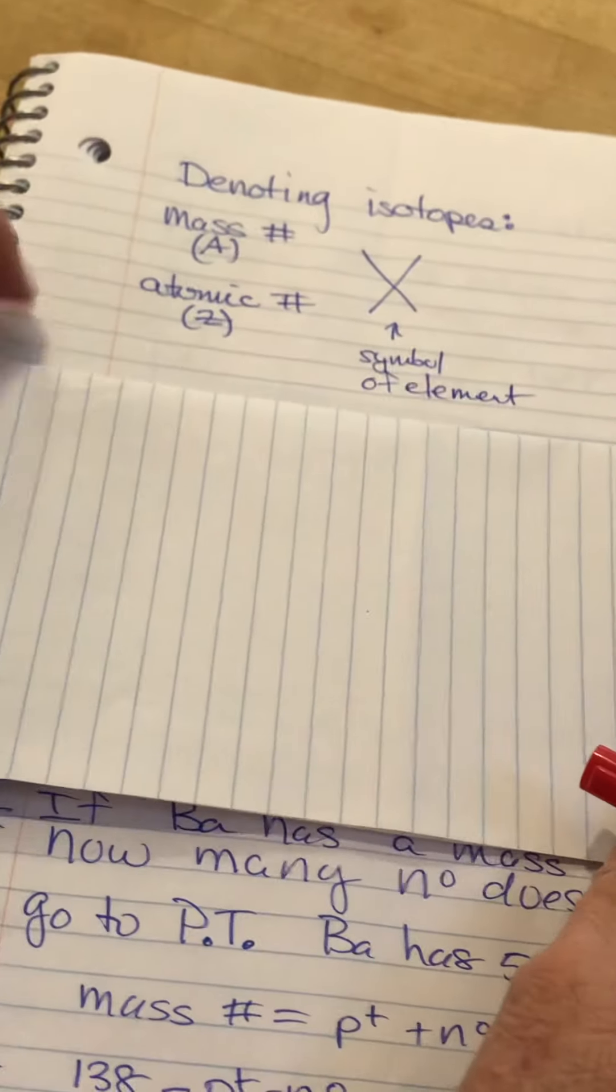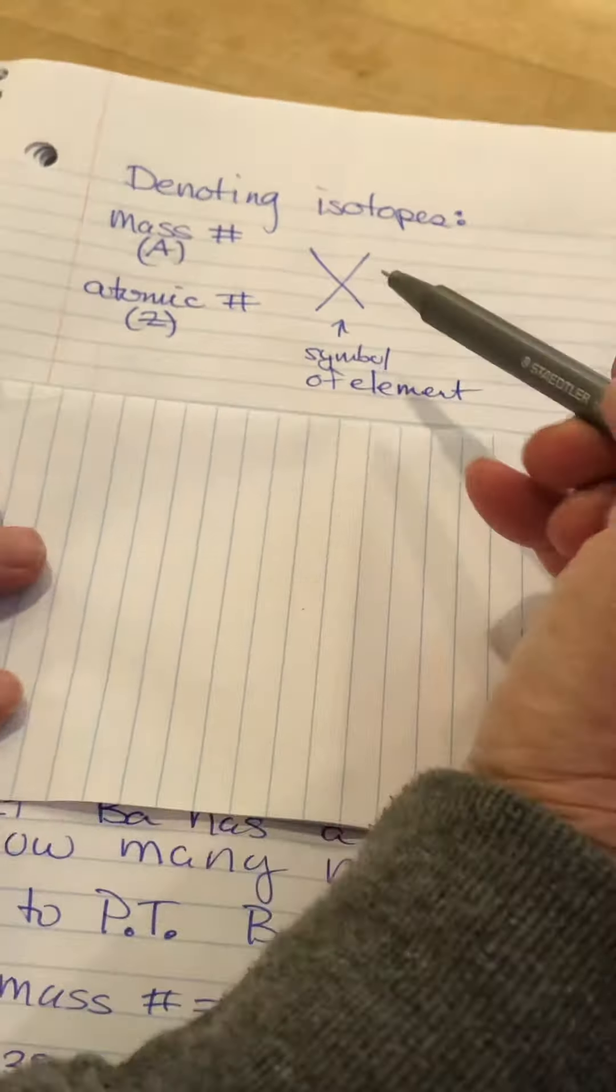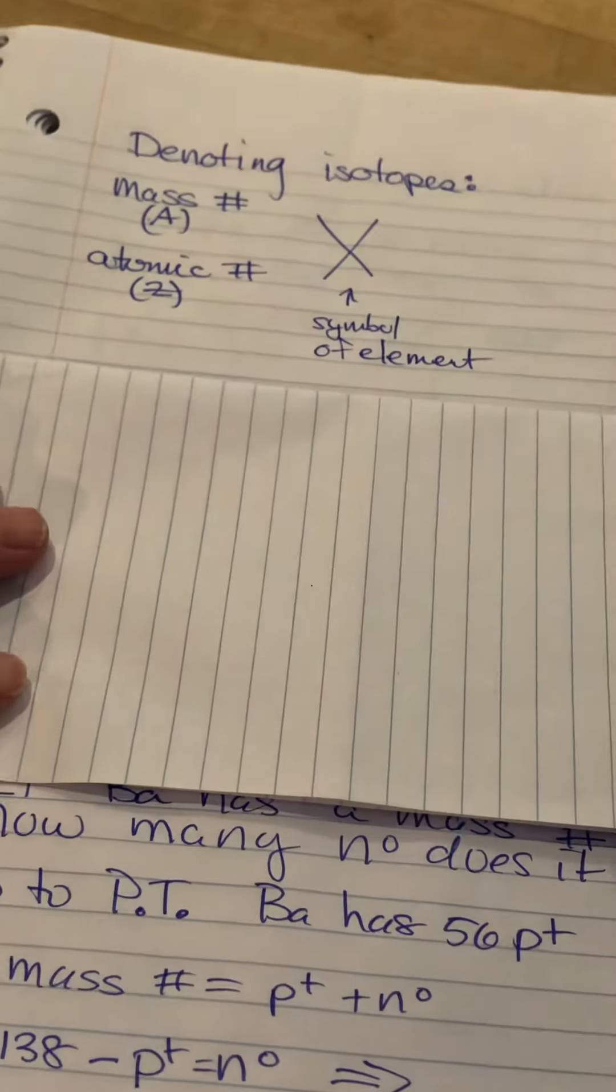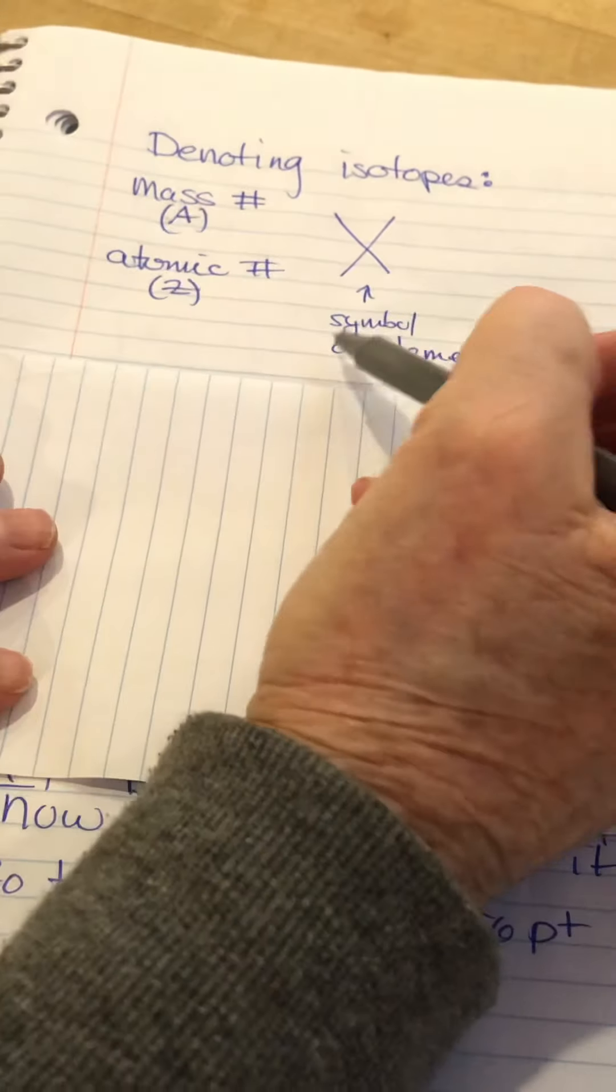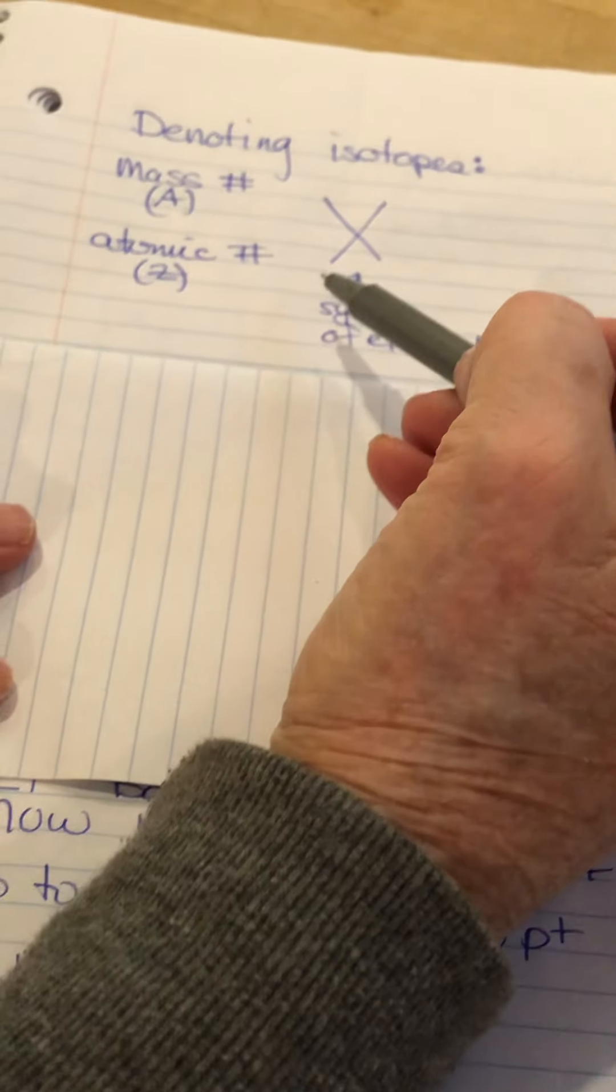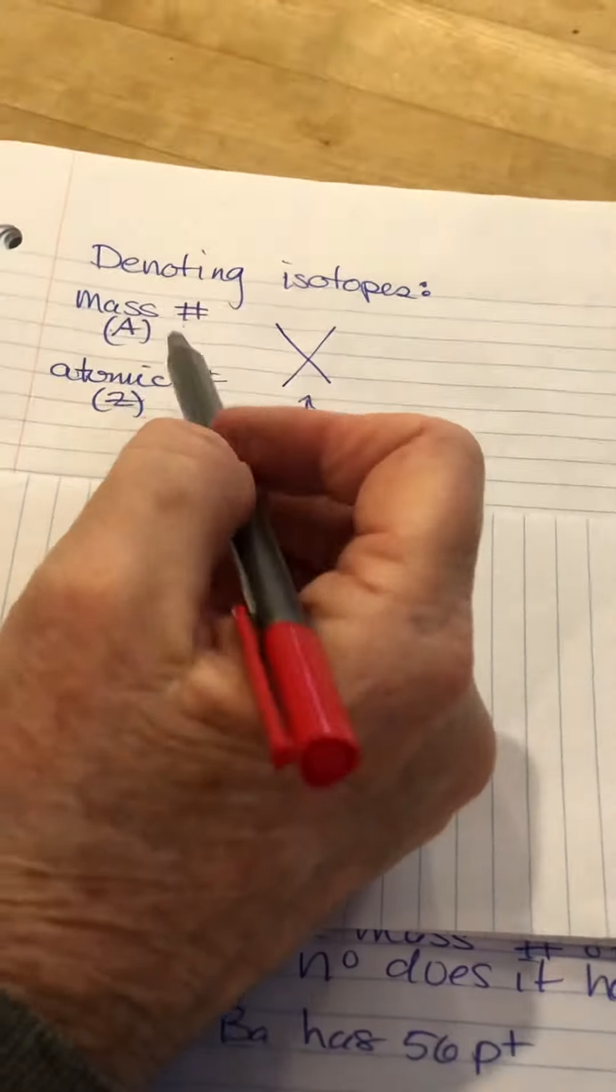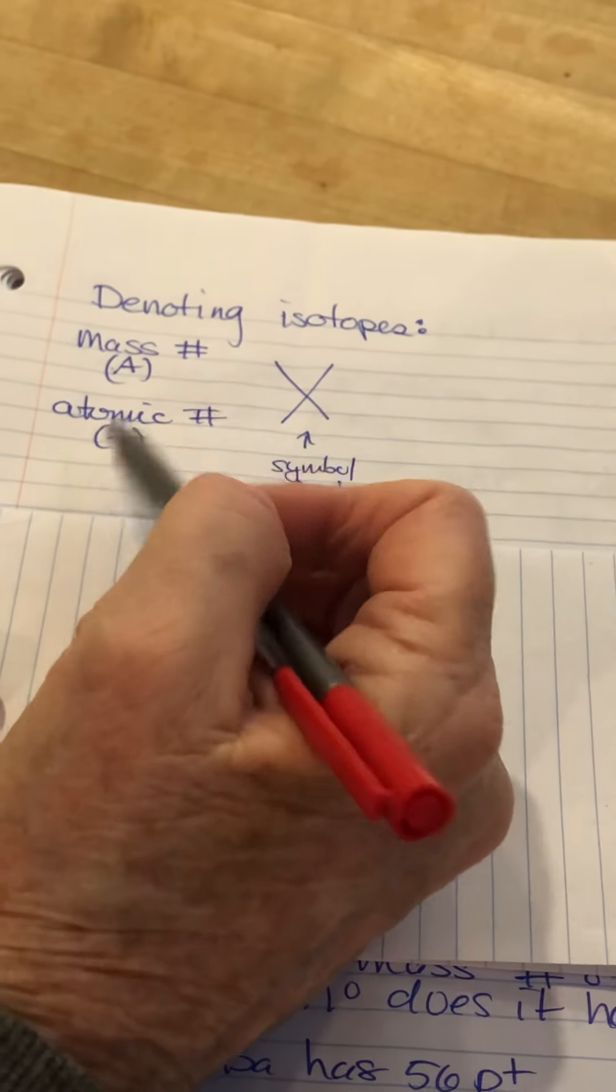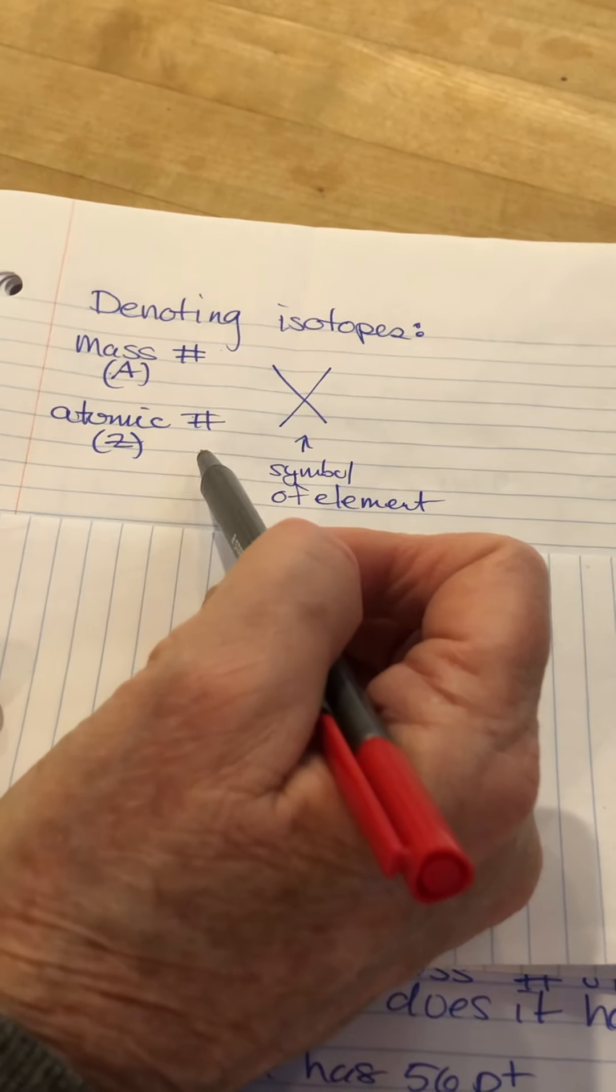Let's see how we denote isotopes. Here we have a symbol for the element, any element. I'm going to use X. And in the upper left-hand corner is the mass number. In the bottom left-hand corner is the atomic number.